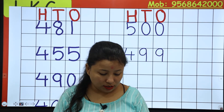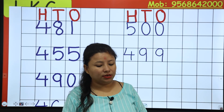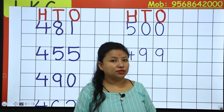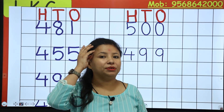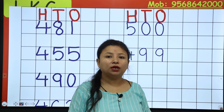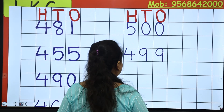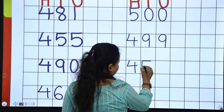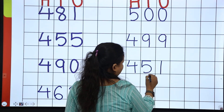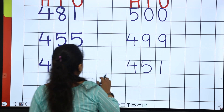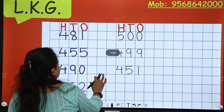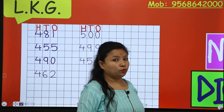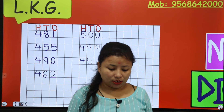Okay, now the next and the last number is 451. 400 it means 4, 50 it means 5, and 1 — 451. So 451. So now these are numbers 451 to 500, but these are not the complete numbers.